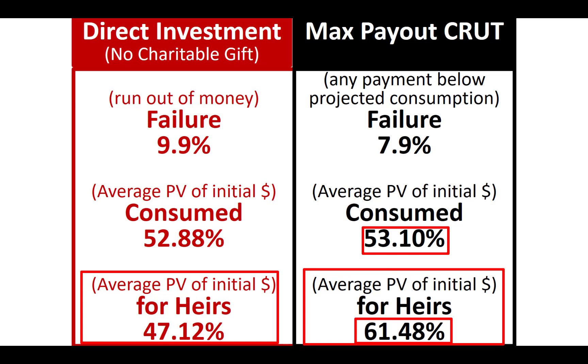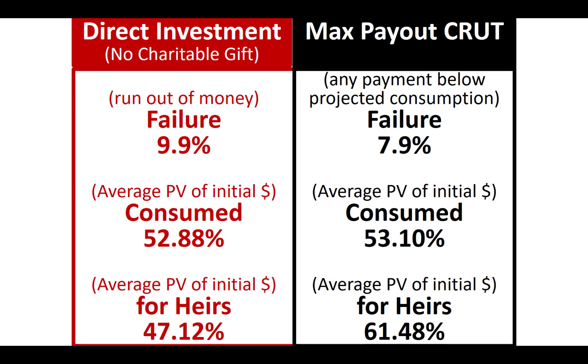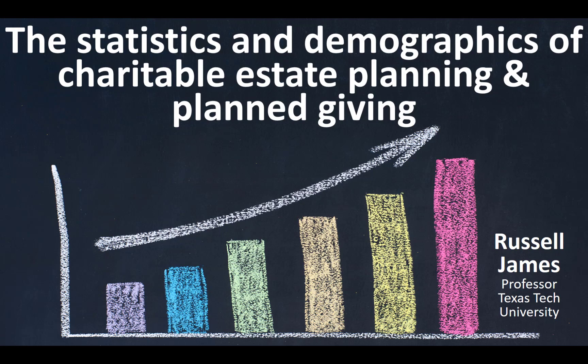That's a bit about the statistics and demographics of charitable estate planning and planned giving — in particular, a look at one wonky application of how all of these things can affect charitable financial planning using a charitable remainder trust. That's it for now. Thanks for joining this presentation on the statistics and demographics of charitable estate planning and planned giving.